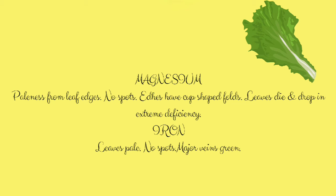In case of iron deficiency, leaves will be very pale, no spots will be seen on the surface, and the major veins on the leaves will appear very dark green in color.